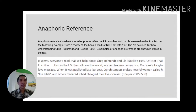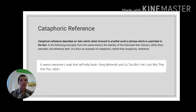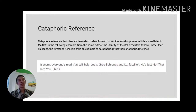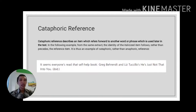The next type is cataphoric reference, which describes an item that refers forward to another word or phrase used later in the text. In anaphoric reference, you mention the noun first and then use the reference after. In cataphoric reference, it is reversed — you mention the reference first. For example: 'It seems everyone read that self-help book.' The word 'that' is used as a reference to something mentioned afterwards — 'He's Just Not That Into You' — which is the book that 'that' refers to.